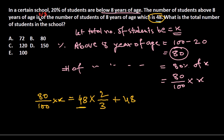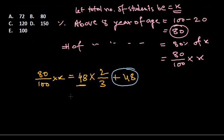This is an important point where most students make mistakes. They think the number of students eight years of age is 48, so two-thirds of it is just 48 × 2/3, and they don't add 48. But according to our problem-solving approach, the total includes the base number plus two-thirds of it. That's why we need to add 48 to get the full equation.